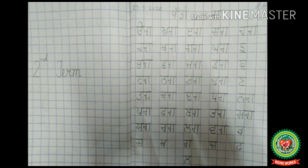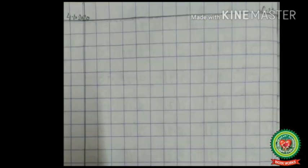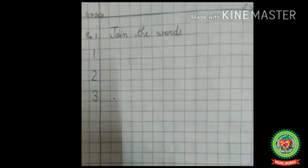Take out your copy. After you have done the practice with gagga, turn the page. On a new page, set the margin, put today's date, and write 'C.W.' at the right side of the page. After that, leave one line and write 'Exercise 1,' then write 'Join the Words' — J-O-I-N, join, T-H-E, the, W-O-R-D-S, words.